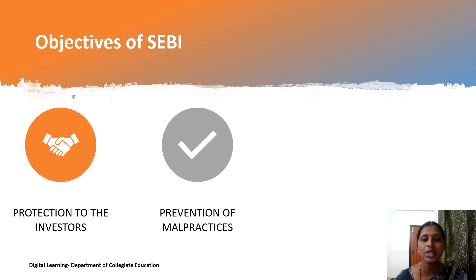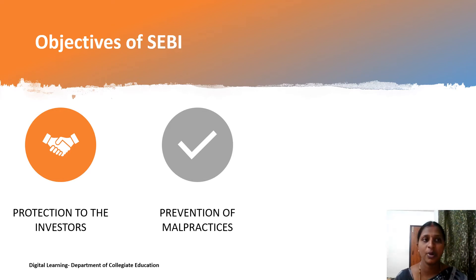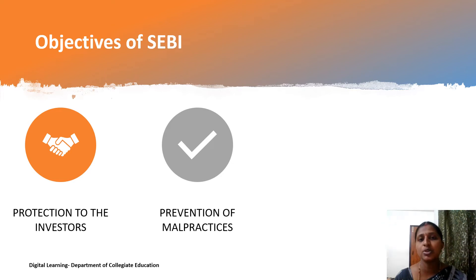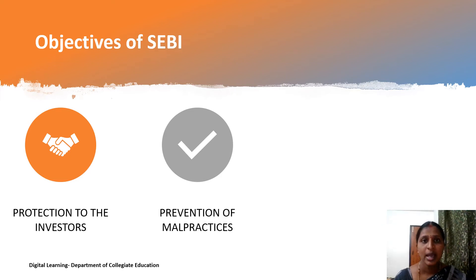The second objective is prevention of malpractices. As discussed previously, SEBI was established to reduce malpractices in the capital market. Thus, the main objective of SEBI is to prevent malpractices such as insider trading, price rigging, and manipulation of share market prices, etc.